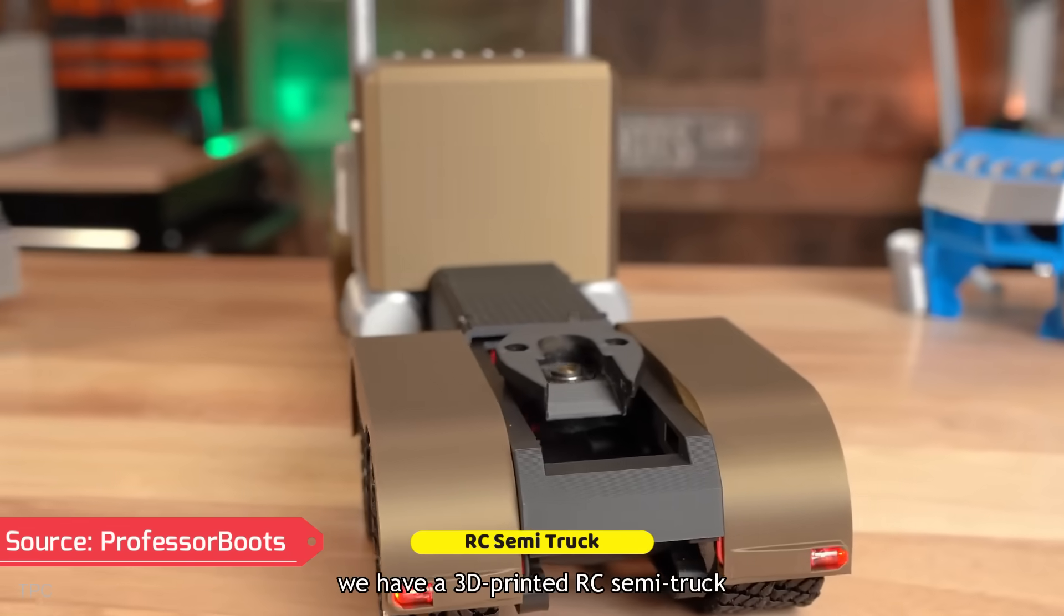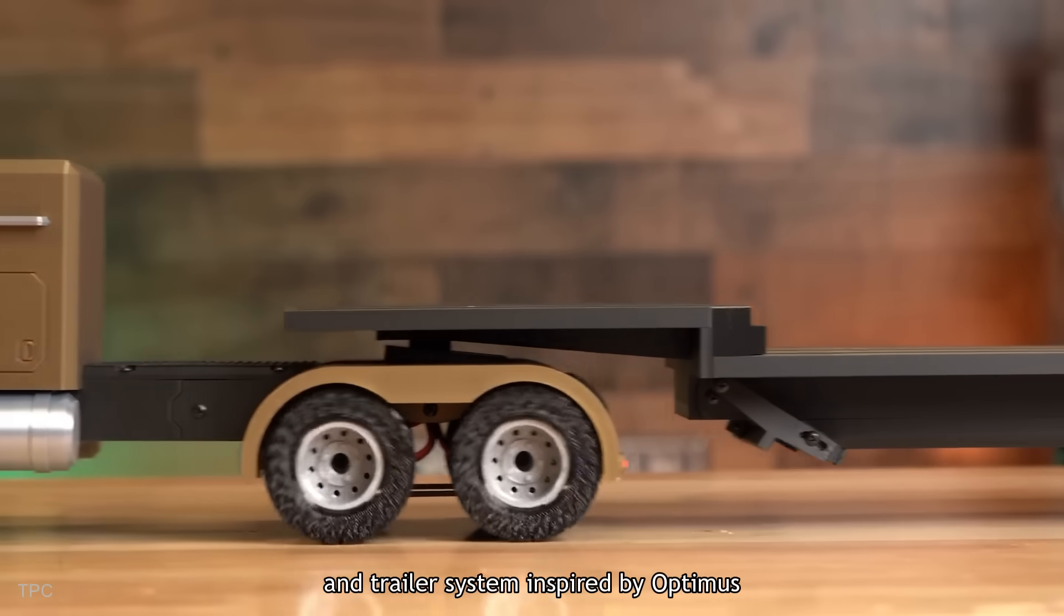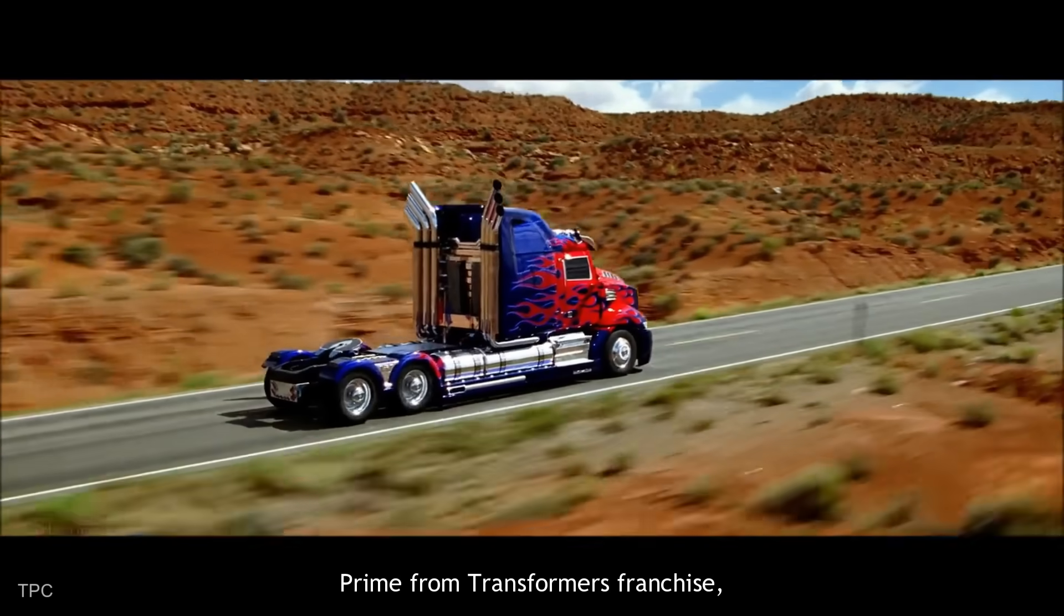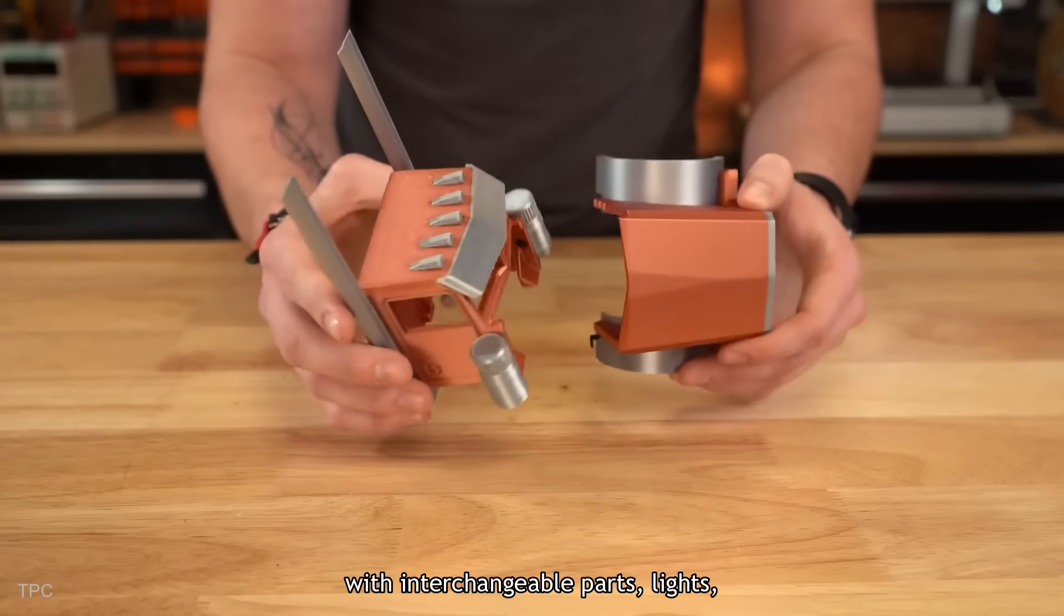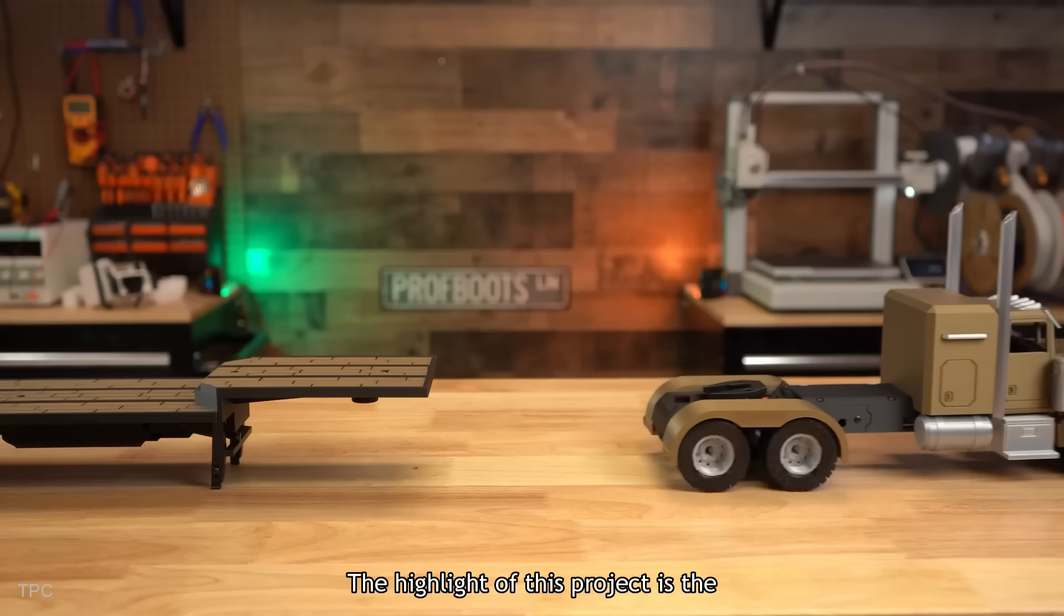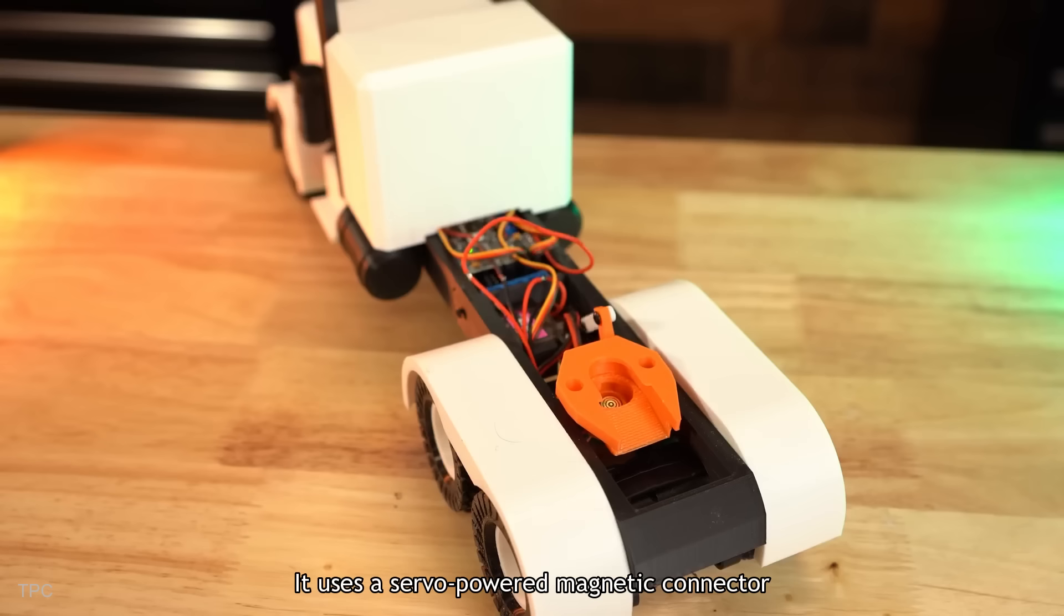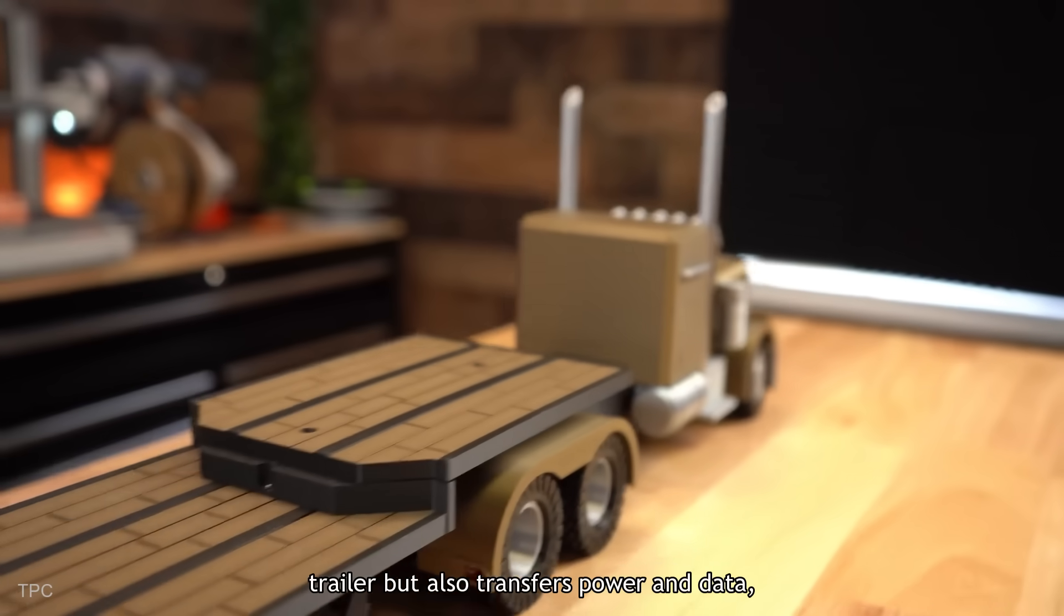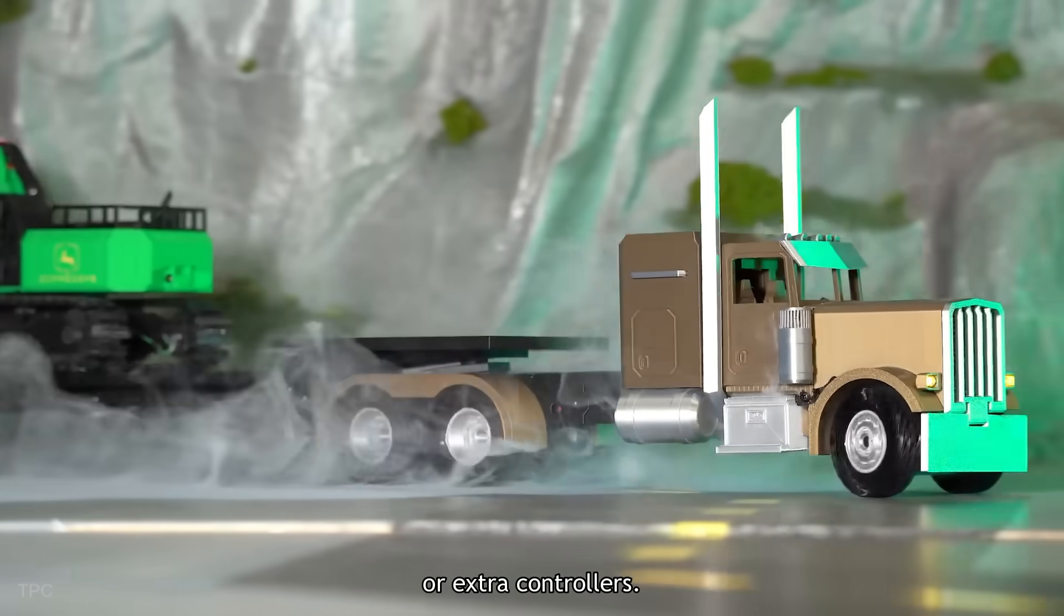Next on the list, we have a 3D-printed RC semi-truck and trailer system inspired by Optimus Prime from Transformers franchise. With interchangeable parts, lights, and color options. The highlight of this project is the automatic hitching system. It uses a servo-powered magnetic connector that not only physically latches the trailer but also transfers power and data, eliminating the need for trailer batteries or extra controllers.